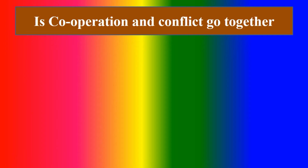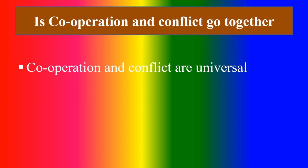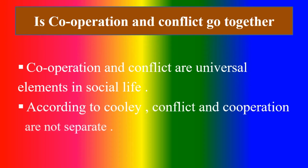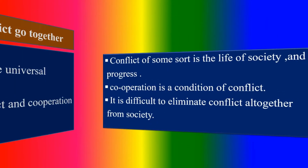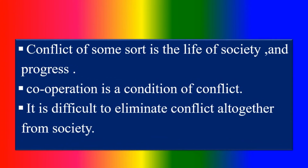Is cooperation and conflict related? Yes, cooperation and conflict are universal elements in social life. According to Cooley, conflict and cooperation are not separate. Conflict of some sort is the life of society and progress. Cooperation is a condition of conflict. It is difficult to eliminate conflict or cooperation from society.